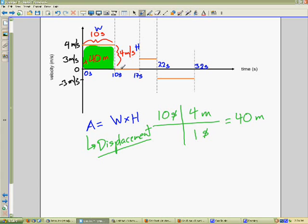So let's take a look at the next area. Here, I have a height of 0 and I have a width of 10 to 17, so that's 7. 0 times 7 is 0, so I'm going to have 0 area. That means I'm going to have 0 displacement.